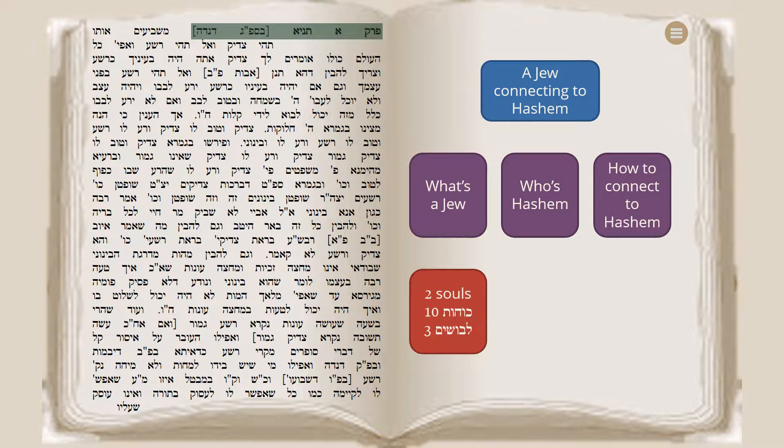The first of the two is about a Yid connecting to Hashem, which itself has three parts, because we speak about a Yid connecting to Hashem. So we have a Yid, we have Hashem, and we have the connection. So we have to learn what is a Yid, who is Hashem, and how does a Yid connect to Hashem.